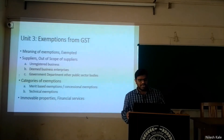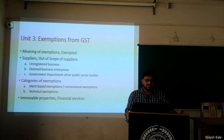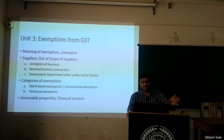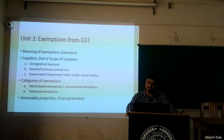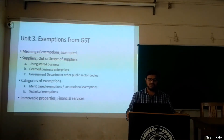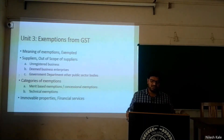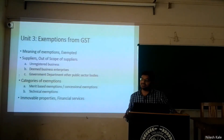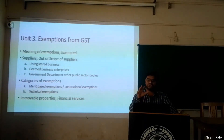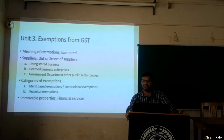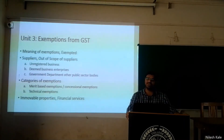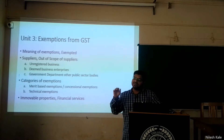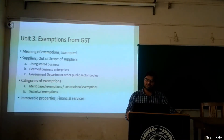Unit three covers exemptions from GST — the meaning of exemptions, exempted suppliers, and out-of-scope suppliers. There are three further classifications: unregistered businesses, deemed business enterprises, and government departments and other public sector bodies. We are going to understand the exemptions on supply of such goods and services, whether GST is applicable or not, and then the categories of exemptions.